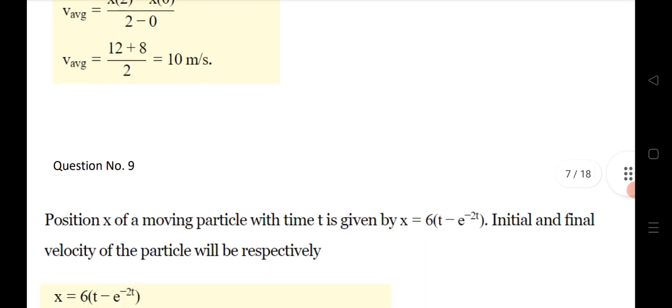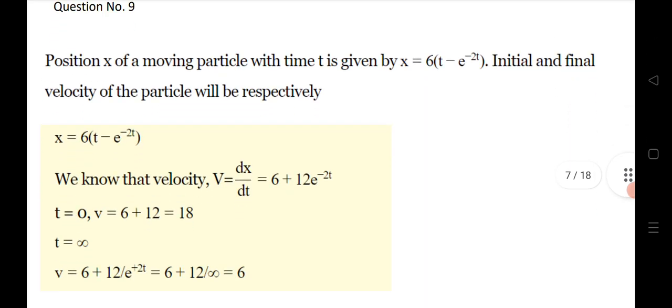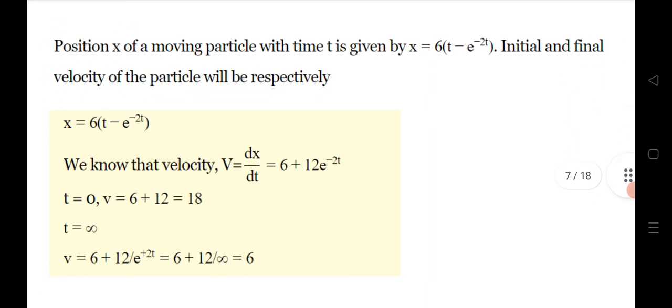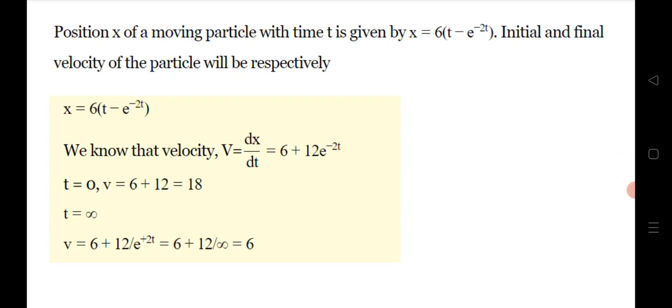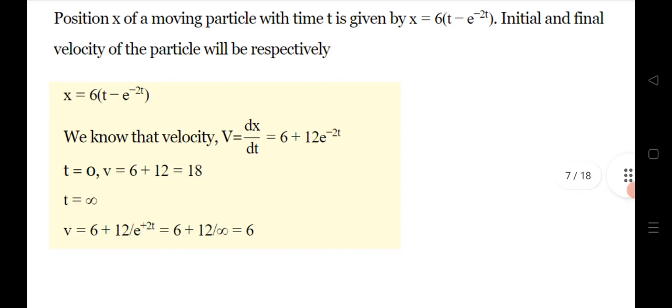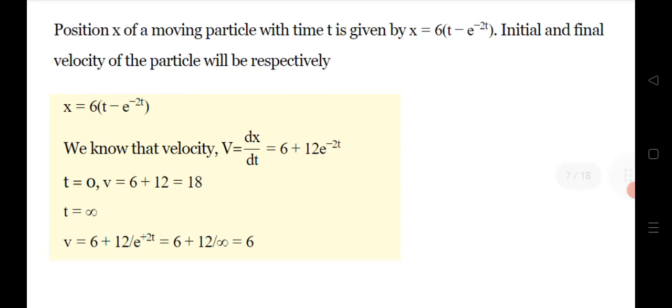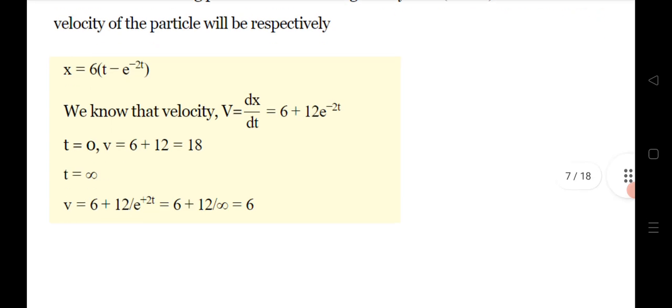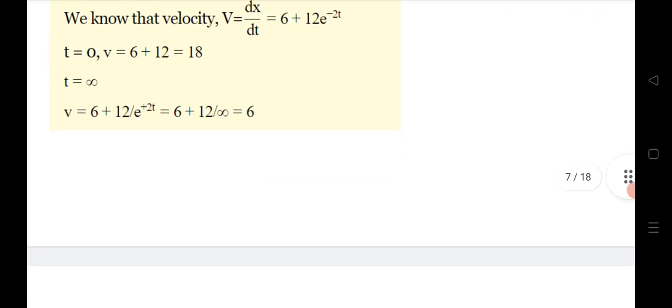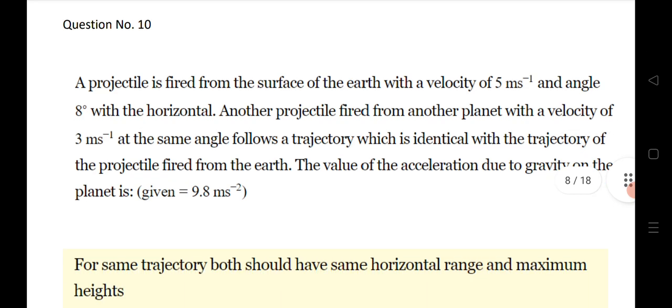Question 9: the position x of a moving particle as a function of time t is given. Find the initial and final velocity using differentiation: v = dx/dt. For initial velocity, substitute t = 0; for final velocity, substitute t → ∞. The initial velocity is 18 and the final velocity is 6.